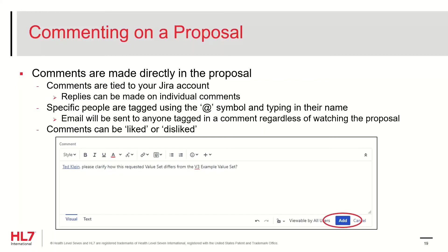All comments are tied to your HL7 JIRA account so everyone will be able to tell that you made the comment and can reply to you directly if they desire. To reply to a comment, simply go to the comment of interest and click the Reply link below the comment. This will bring up the text editor to enter the reply. Once a reply is entered, the comments will be nested to show that they are related and help maintain an organized threaded comment section for each change proposal.